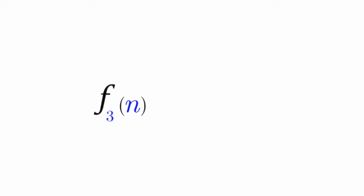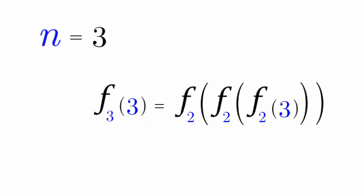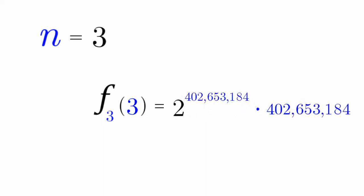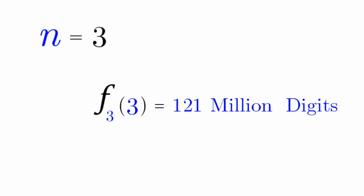But what about f sub 3 of n when n is equal to 3? That's f sub 3 of 3. Because we have 3 as n, we do the f sub 2 process 3 times. f sub 2 of 3 is 2 to the power of 3 times 3, which is equal to 24. f sub 2 of 24, that's 2 to the power of 24 times 24, which is 402 million. Now f sub 2 of 402 million, that's 2 to the power of 402 million times 402 million. That's around 121 million digits.